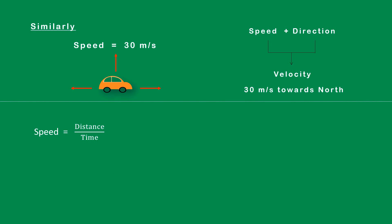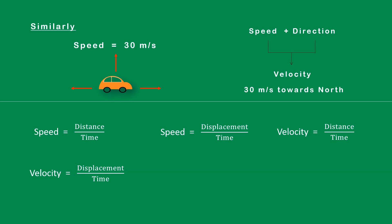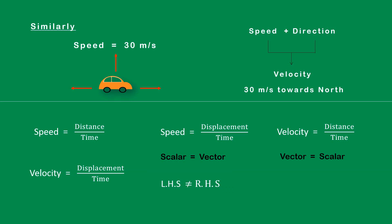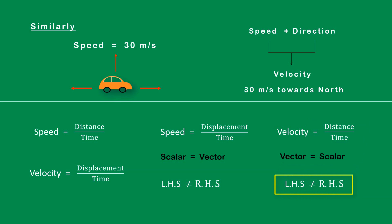Speed is equal to distance divided by time. Velocity is equal to displacement divided by time. If I write speed equal to displacement divided by time, or velocity equal to distance divided by time, both are wrong. On the left side, speed is a scalar quantity, but displacement on the right is a vector quantity — left-hand side does not equal right-hand side. Similarly, velocity is a vector but distance is a scalar, so again they don't match. Therefore both of those are wrong formulas, while the original pair are the correct formulas.